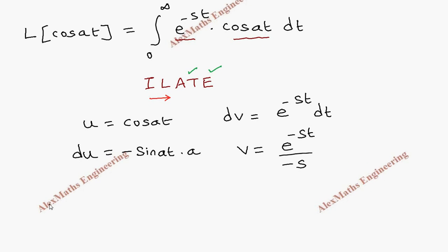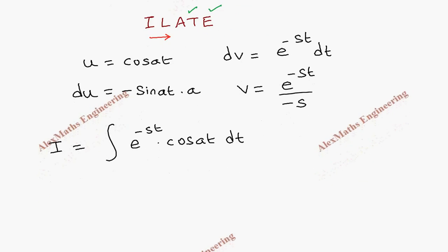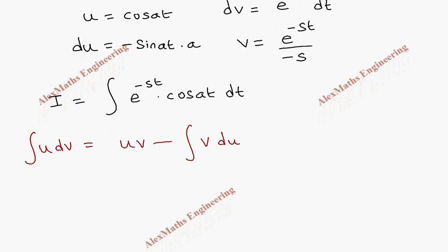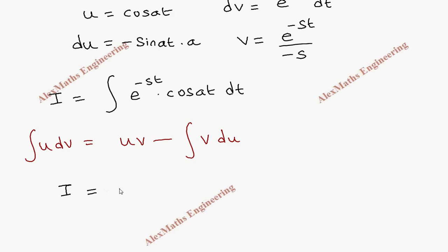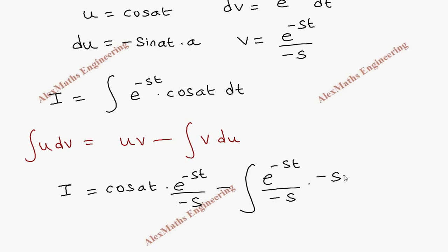Now coming to this integration, let us take I as the integral without limits of e^(-st) times cos(at) dt. Applying integration by parts, the formula is uv minus integral of v du. We can substitute the limits at the end. Substituting: I equals u times v, which is cos(at) times e^(-st)/(-s), minus the integral of v times du, where v is e^(-st)/(-s) and du is -sin(at) times a dt.